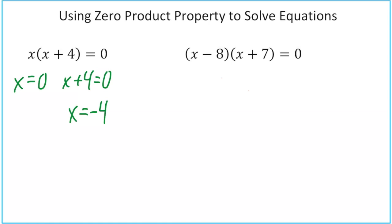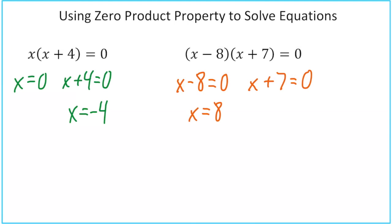Let's try the next one: the quantity x minus 8 times the quantity x plus 7 equals zero. We know that either x minus 8 equals zero, or x plus 7 equals zero. Solving the left: move the negative 8 to the other side and you get x equals 8. Solving the right: move the positive 7 to the other side and you get x equals negative 7.